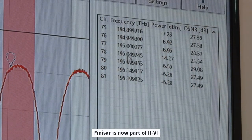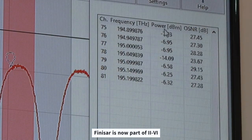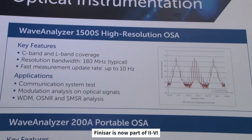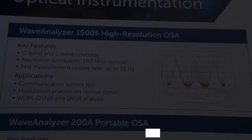The table shows frequency, power level, and OSNR. The WaveAnalyzer 1500S is available with C-band and with L-band coverage. It provides a unique combination of resolution bandwidth and speed — high resolution of 180 MHz at the same time as high measurement speed with an update rate of up to 10 Hz.